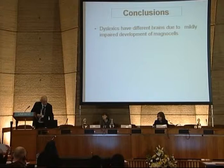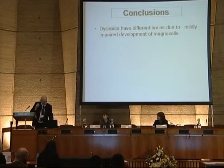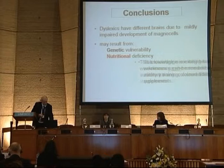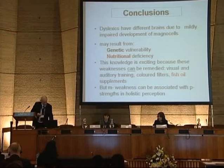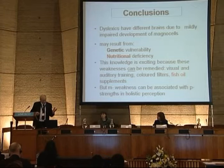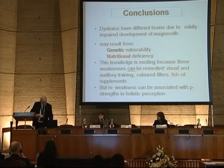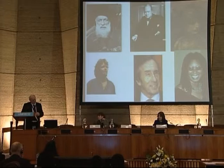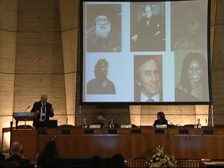To conclude: dyslexics have different brains — not bad brains, just different — due to mildly impaired development of magnocells. This may result from genetic vulnerability or nutritional deficiency. This knowledge is very exciting because there are things we can do about it. I want to emphasize that magnocellular weakness is often associated with parvocellular strength, particularly in holistic perception. We wouldn't want to get rid of dyslexia — otherwise we'd never have had fantastic people like Rodin, Winston Churchill, and Leonardo da Vinci. Don't get rid of dyslexia; learn to understand it. Thank you very much.